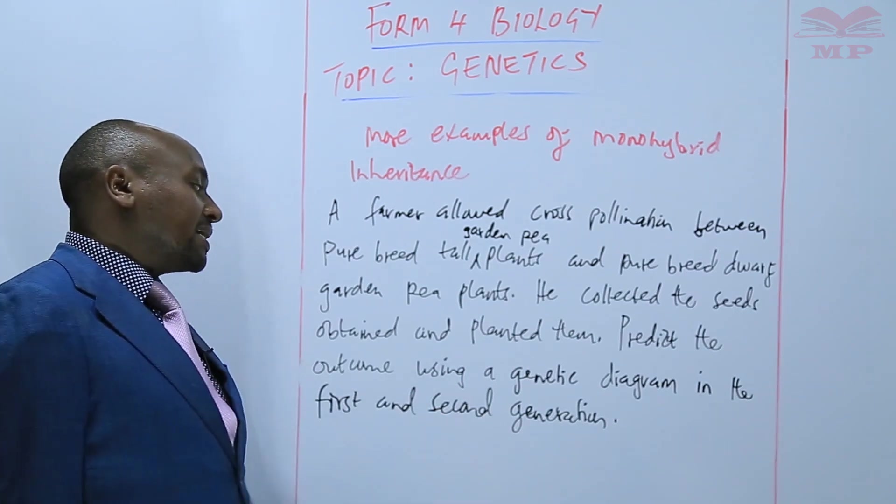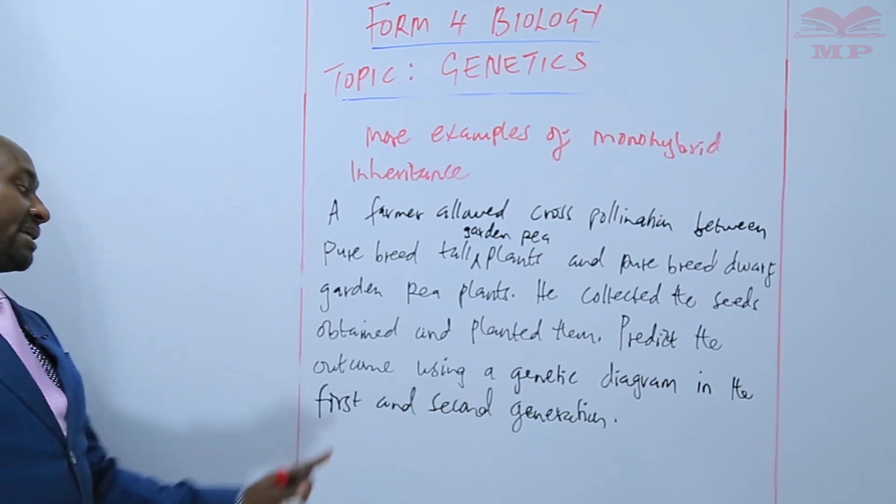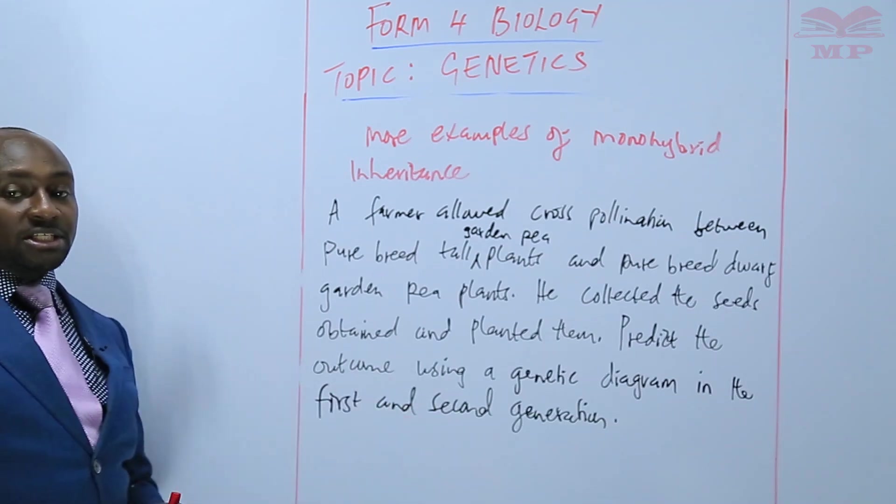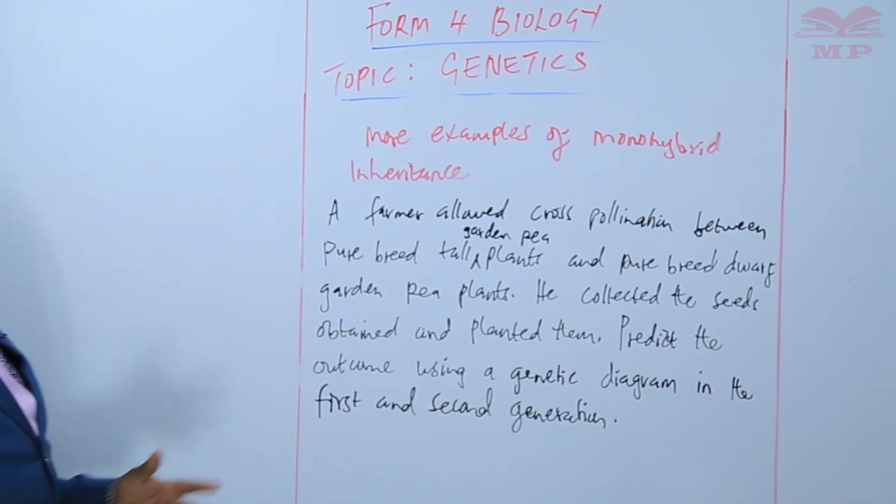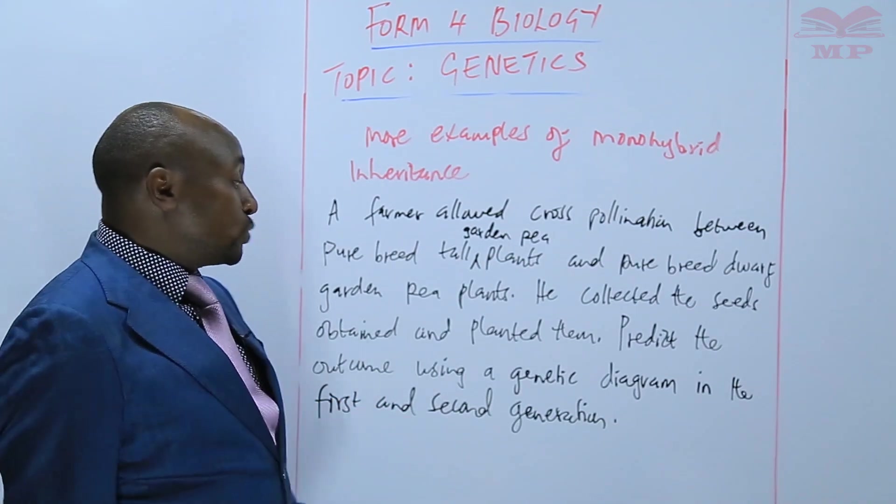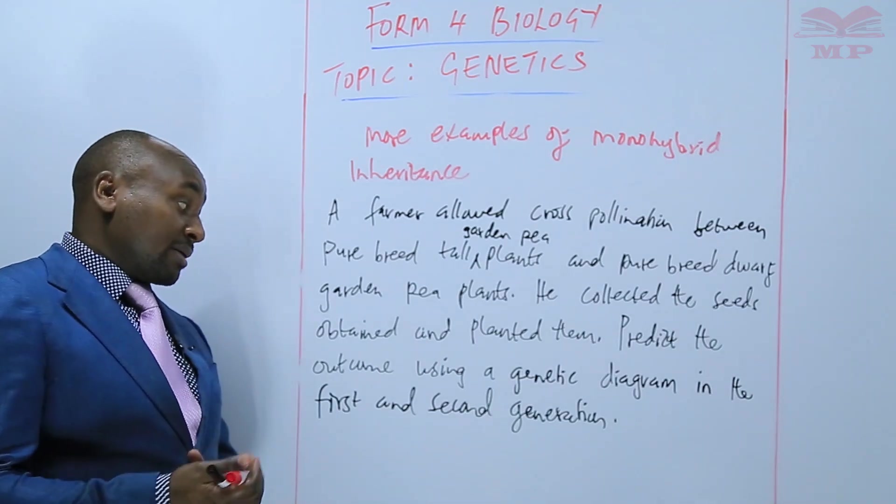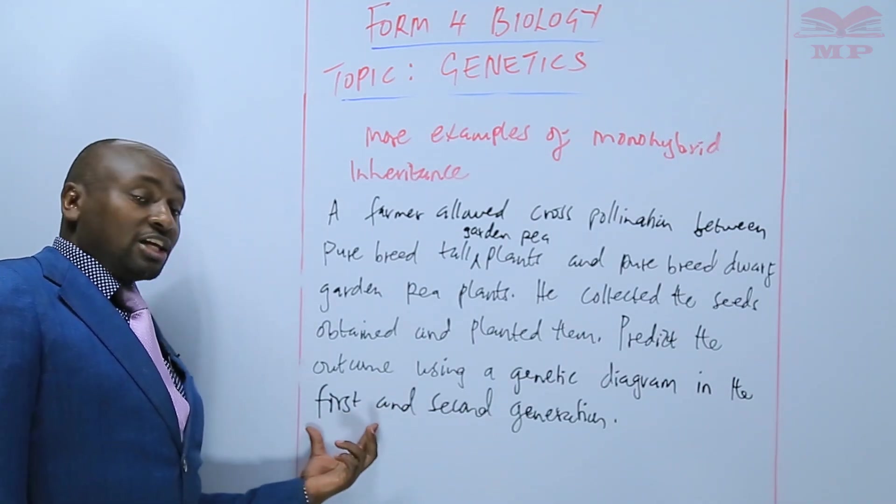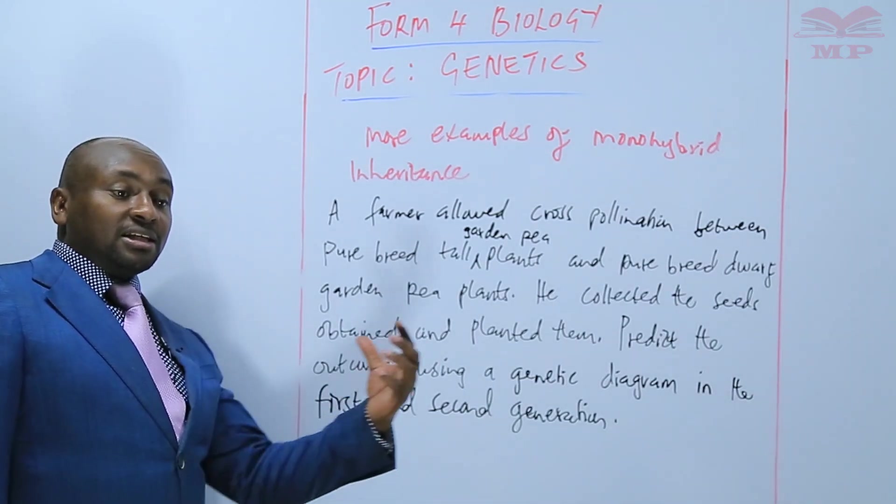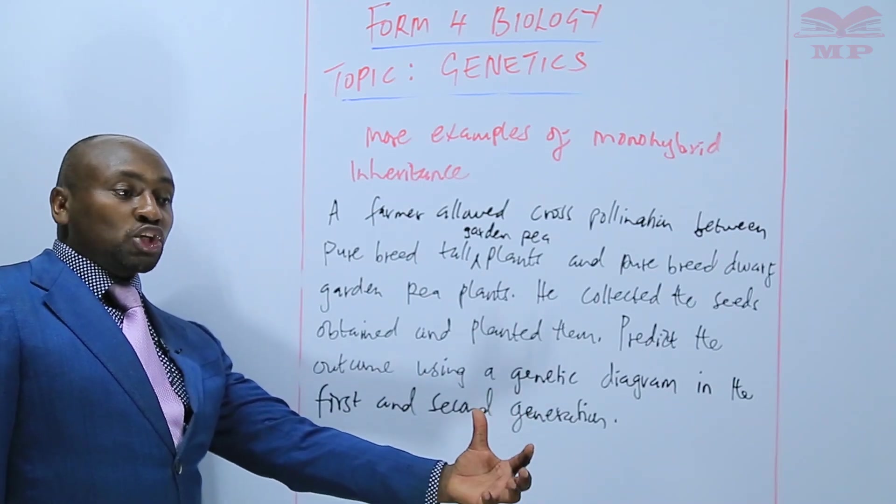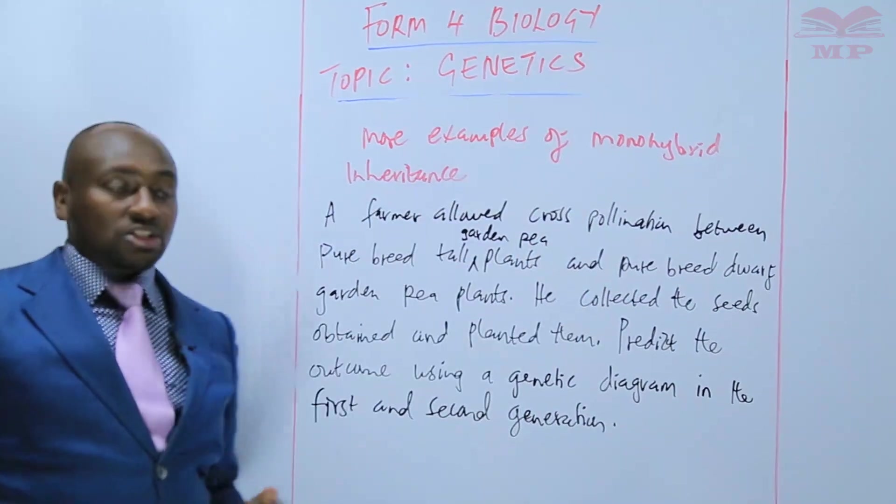Predict the outcome using genetic diagrams in the first and second generations. This shows we are going to have two genetic diagrams because we have one for the first generation, then after getting the offspring we go to the next generation.